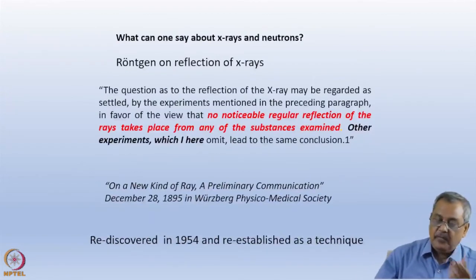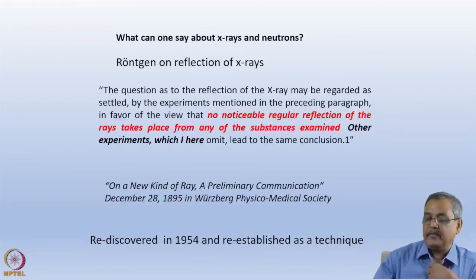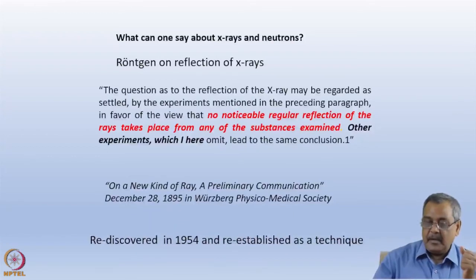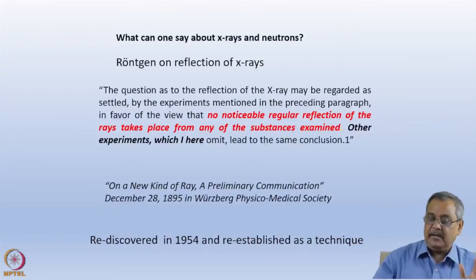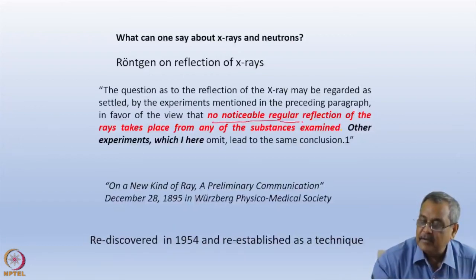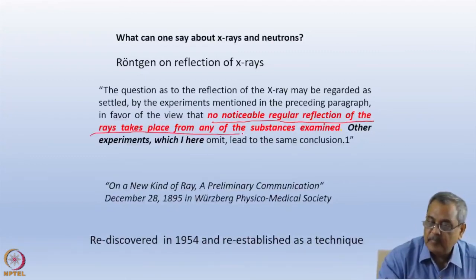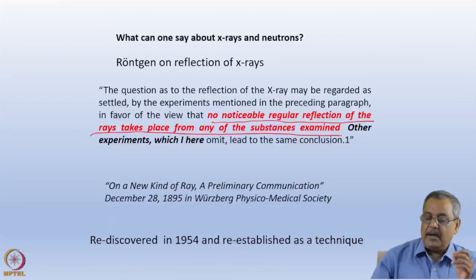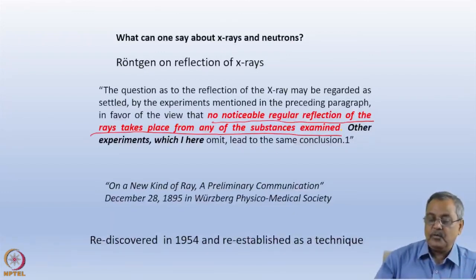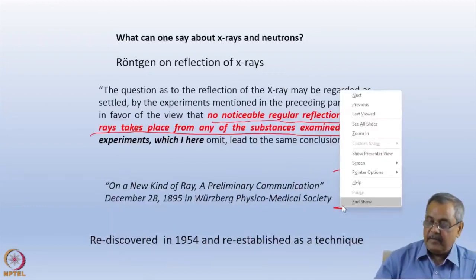Interestingly, historically, this is a major technique today. The discoverer of X-rays, Röntgen, the first Nobel laureate — look at his comment in 1895: 'The question as to reflection of the X-ray may be regarded as settled by the experiments mentioned in the preceding paragraph, in favour of the view that no noticeable regular reflection of the rays take place from any of the substances examined.' So he said that X-rays cannot be reflected. This is December 28, 1895, the year X-rays were discovered.